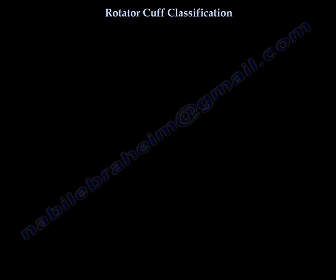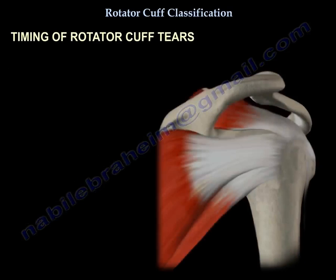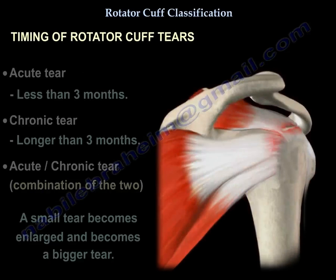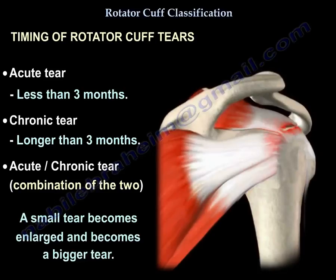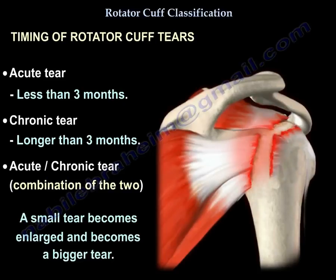Regarding the time-based classification, the tear can be acute — less than 3 months — or chronic — longer than 3 months — or acute on chronic, where a small tear becomes enlarged into a bigger tear.